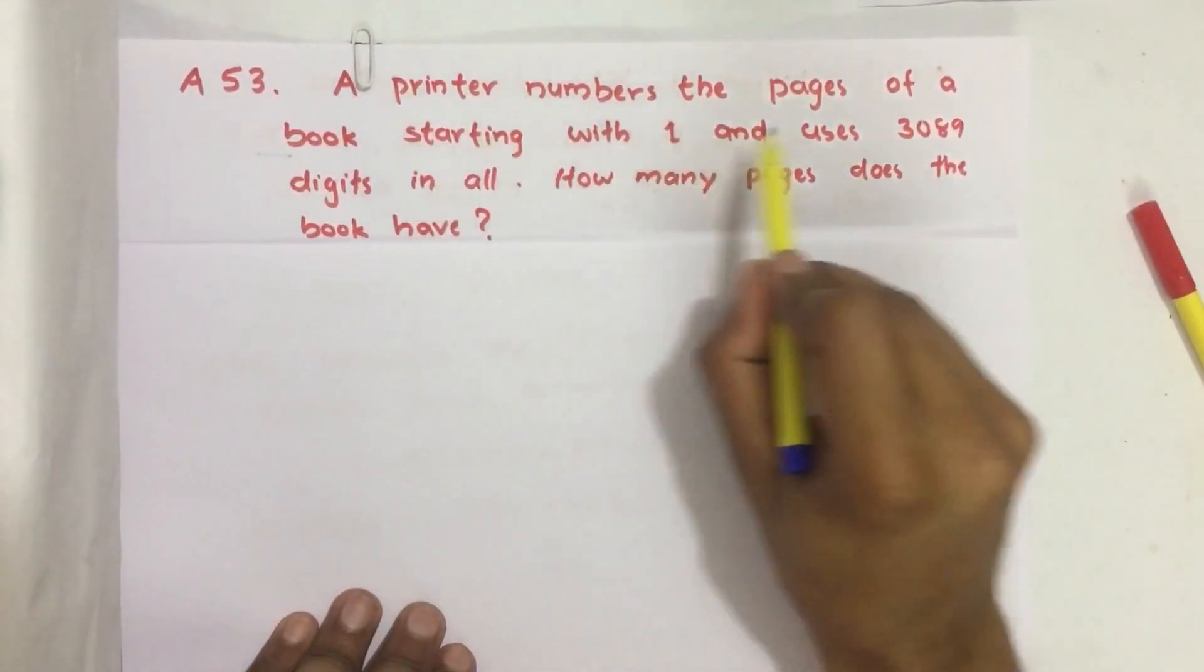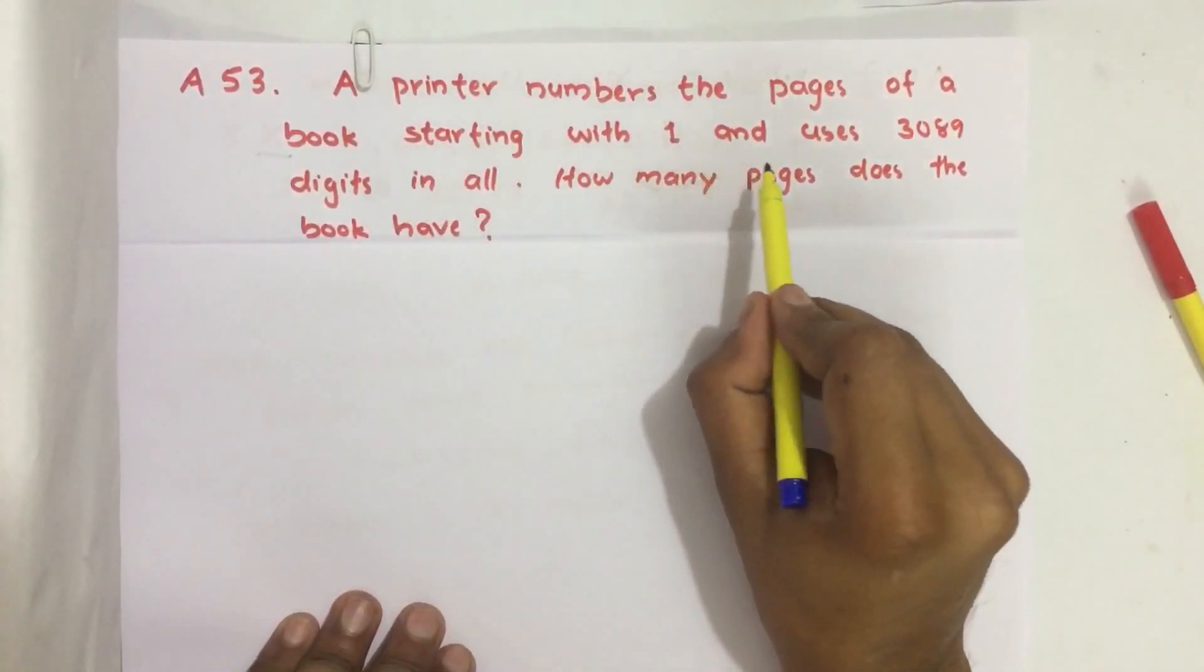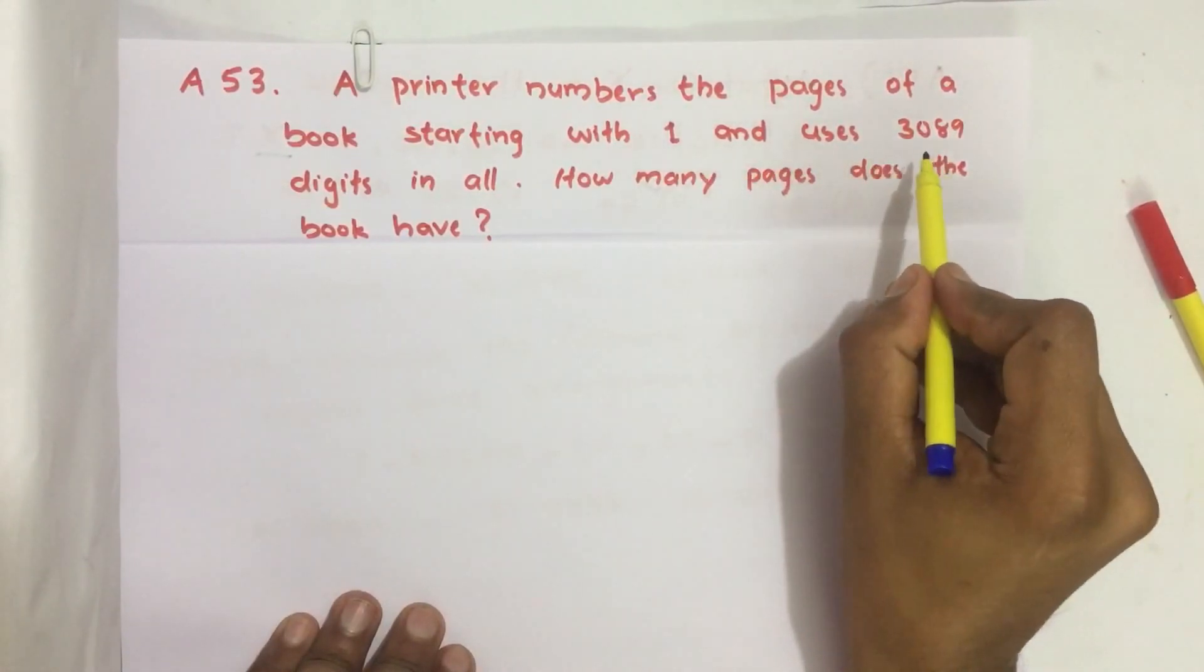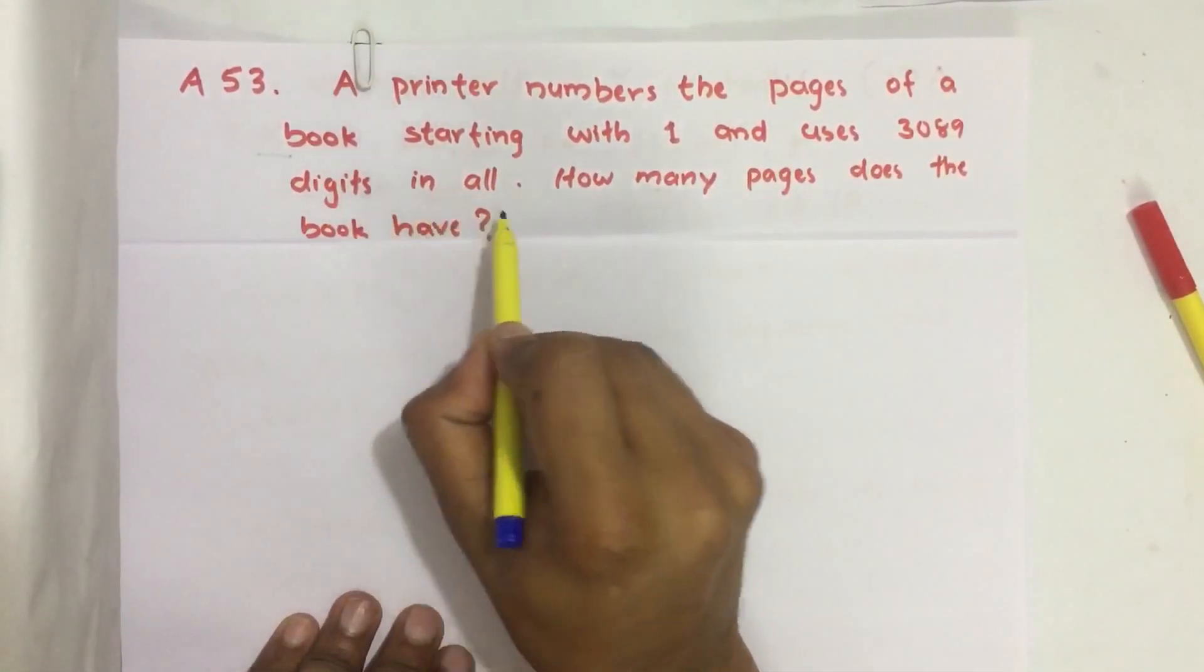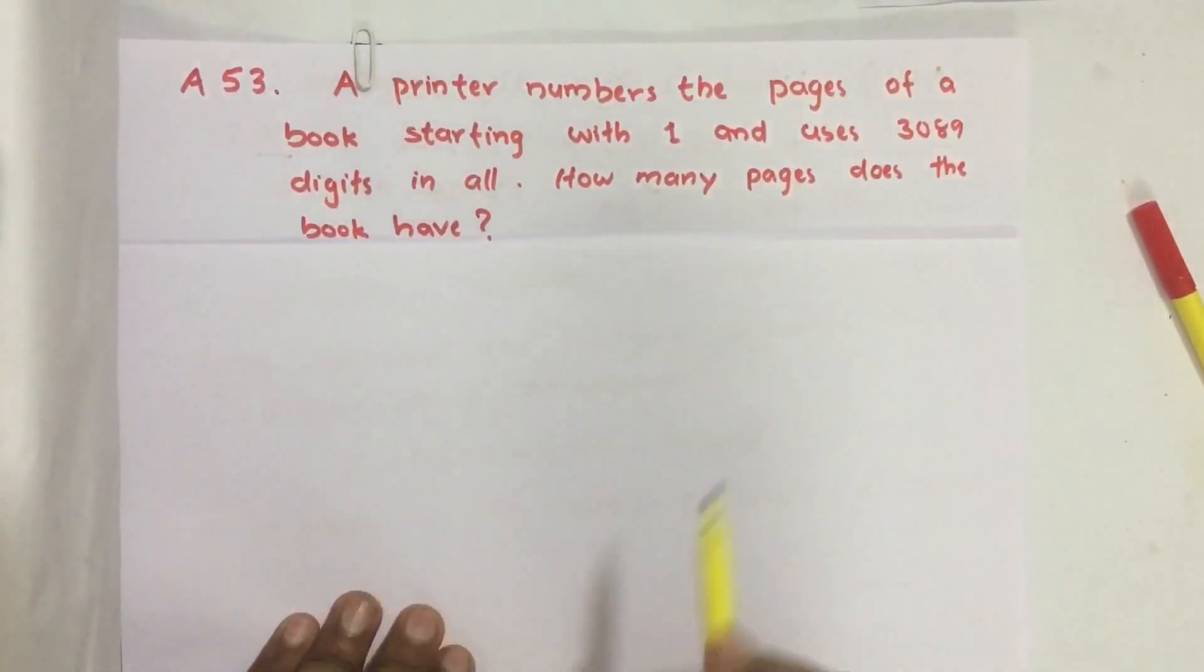A printer numbers the pages of a book starting with 1 and uses 3089 digits in all. How many pages does the book have?